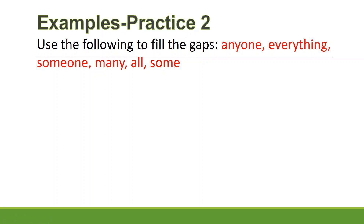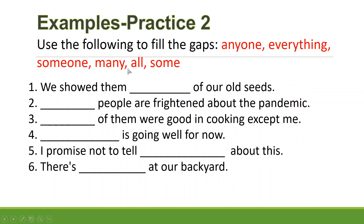For practice number two, fill in the gaps with: anyone, everything, someone, many, all, or some. Number one: 'We showed them _____ of our old seeds.' The correct answer is 'some,' though 'all' or 'many' could also work. Number two: '_____ people are frightened about the pandemic.' You can say 'many,' 'all,' or 'some people are frightened about the pandemic.'